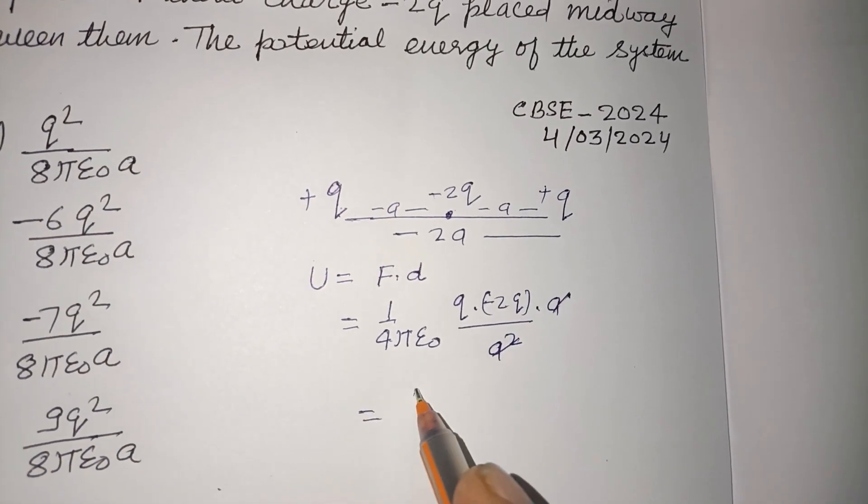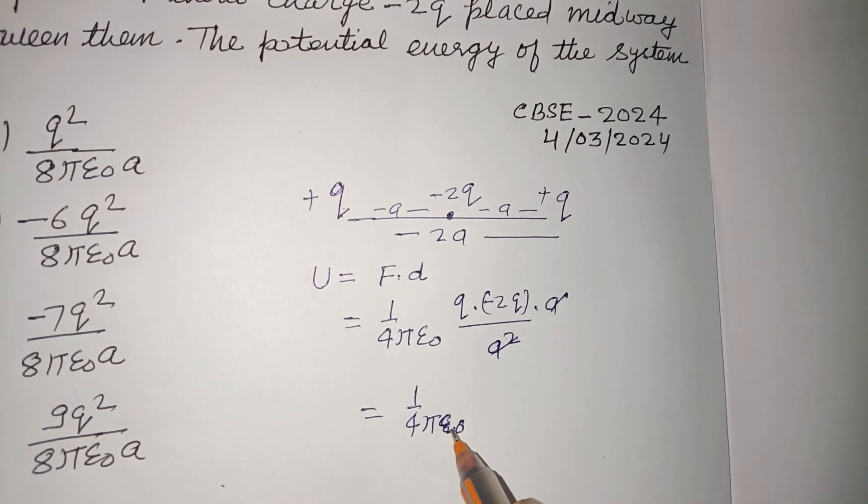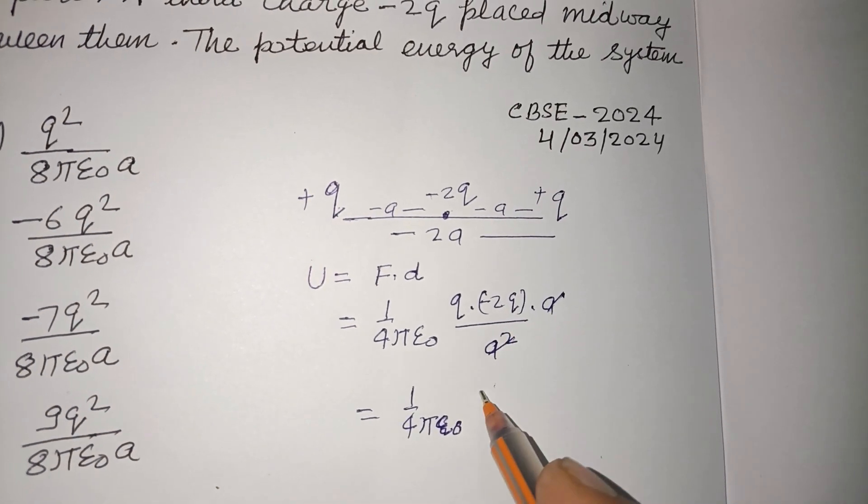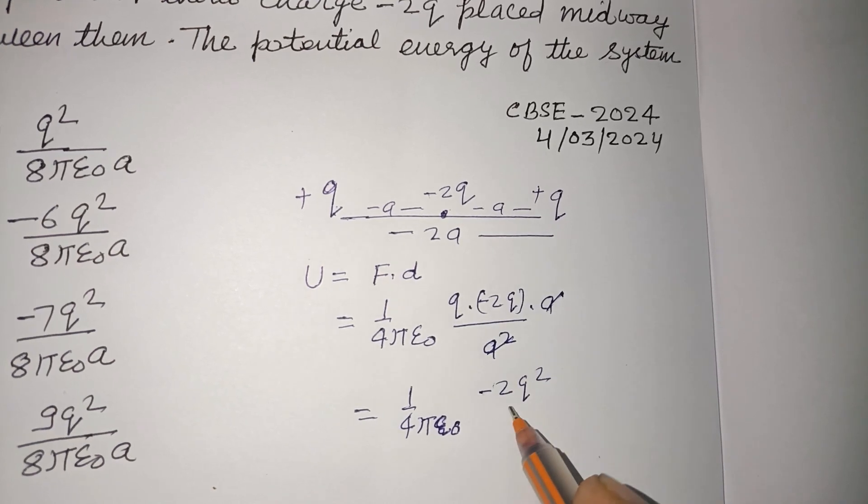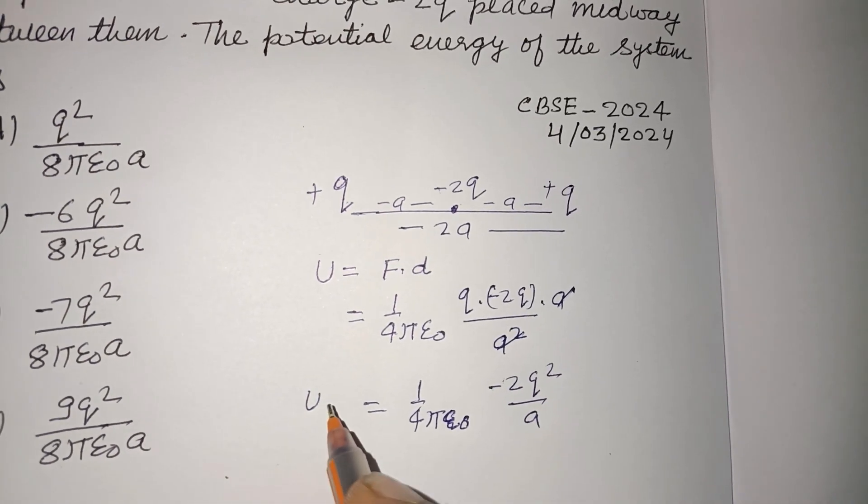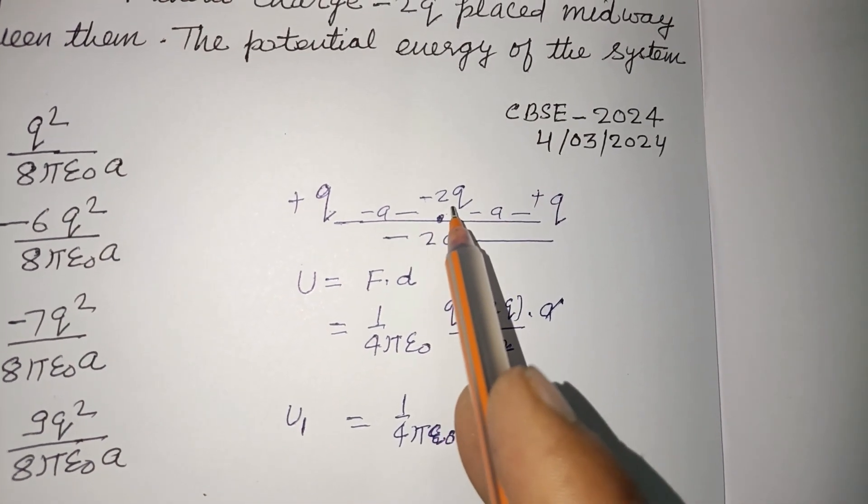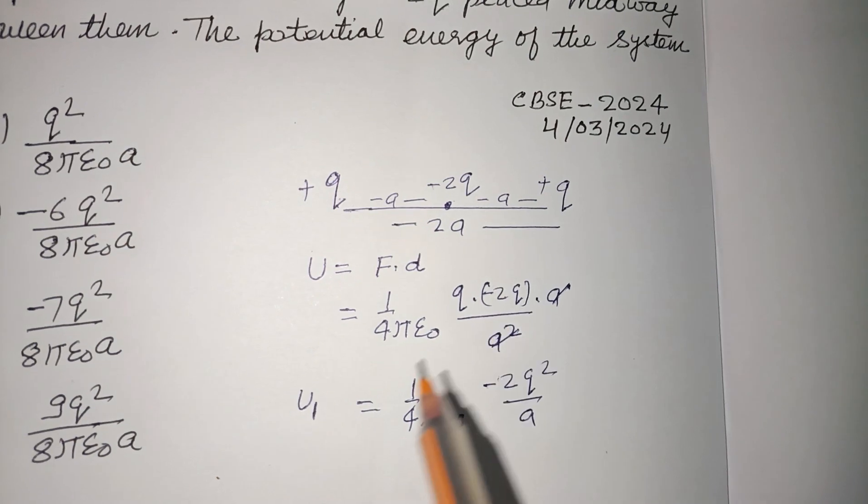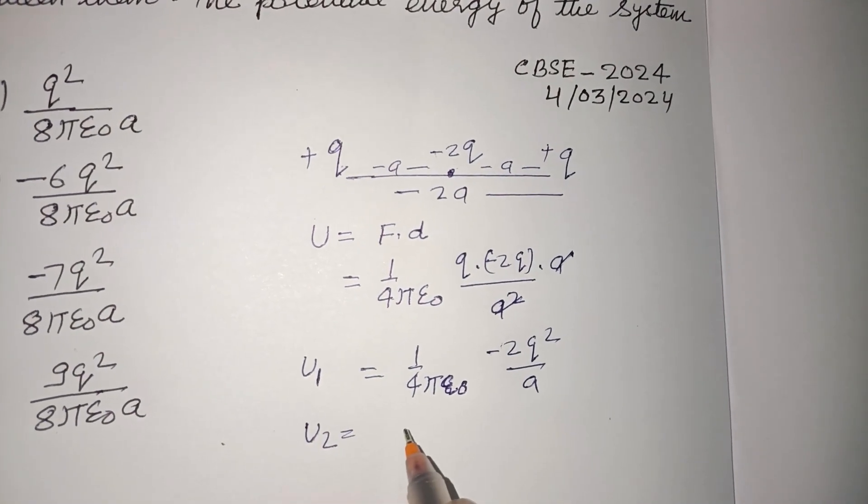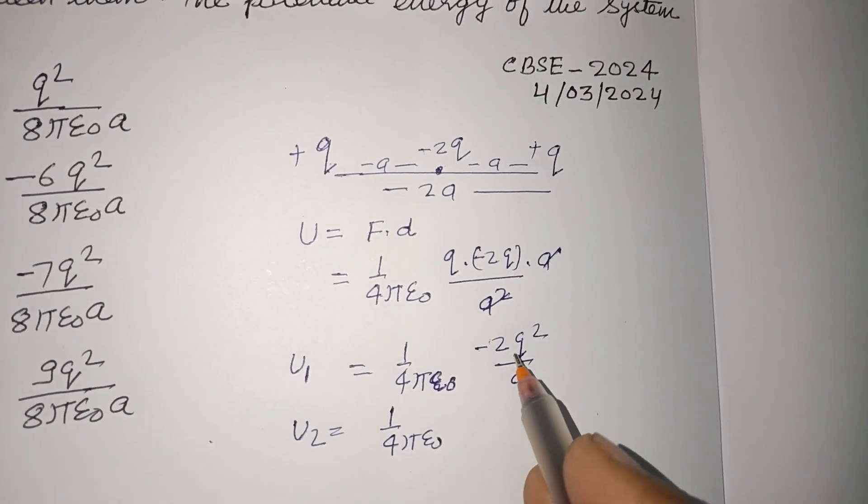So this will be 1 upon 4πε₀. This is again -2Q into Q, so this is -2Q² over A.